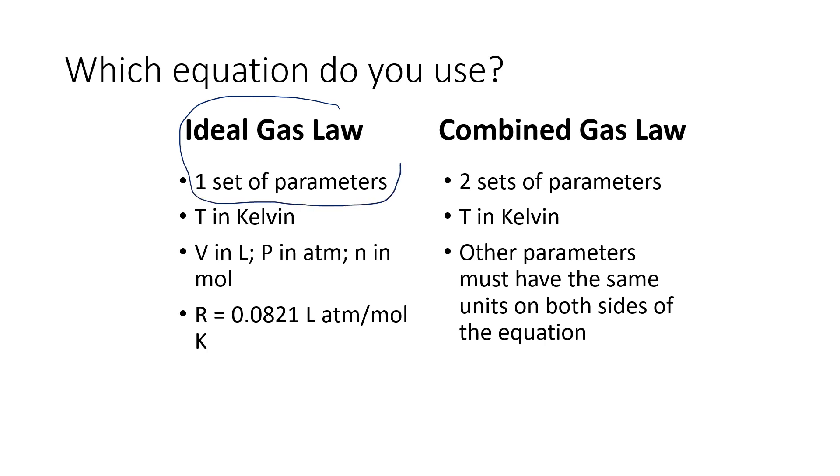So if you've got one set of numbers for all of the parameters, it's an ideal gas law problem. But let's say you have two sets of numbers. You start at this volume, and then the volume expands. And you start at this temperature, but the temperature cools off. And you started at this pressure, but you're wanting to see how the pressure changes. So you've got two numbers for each one of the variables. Then you're going to use the combined gas law.